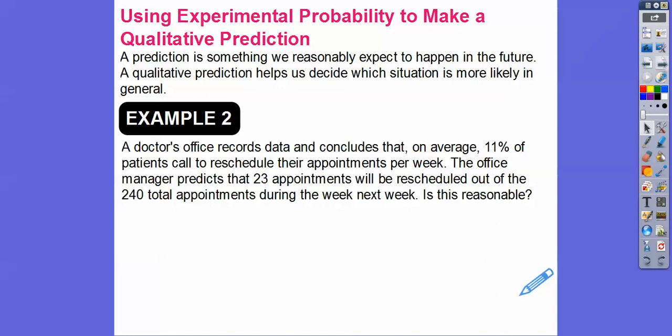So that's why I'm doing this right now. Anyway, things get in the way. So let's get back to this. The office manager predicts 23 appointments will be rescheduled out of 240 total appointments during the week next week. Is this reasonable? So first of all, we know 11% of the patients reschedule. So let's find 11% of 240 and see if it's close to that 23 right there.